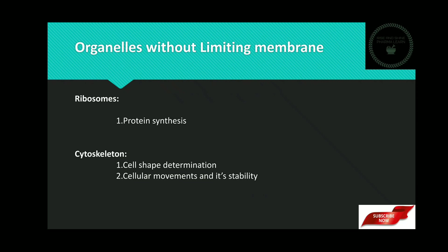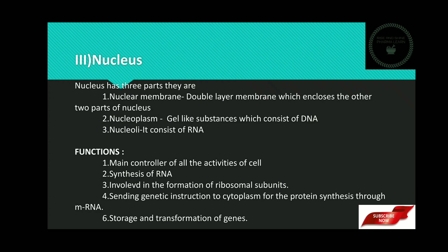Next, the nucleus. The nucleus is the third major part of the cell and has three parts: nuclear membrane, nucleoplasm, and nucleoli. The nuclear membrane is a double-layer membrane which encloses the other two parts, similar to the cell membrane. The nucleoplasm is a gel-like substance which consists of DNA. The nucleoli consist of RNA. Functions of nucleus: it is the main controller of all activities of the cell. It synthesizes RNA using RNA polymerase enzyme. It is also involved in the formation of ribosomal subunits. It sends genetic instructions to the cytoplasm for protein synthesis through mRNA. It is also involved in the storage and transmission of genes.